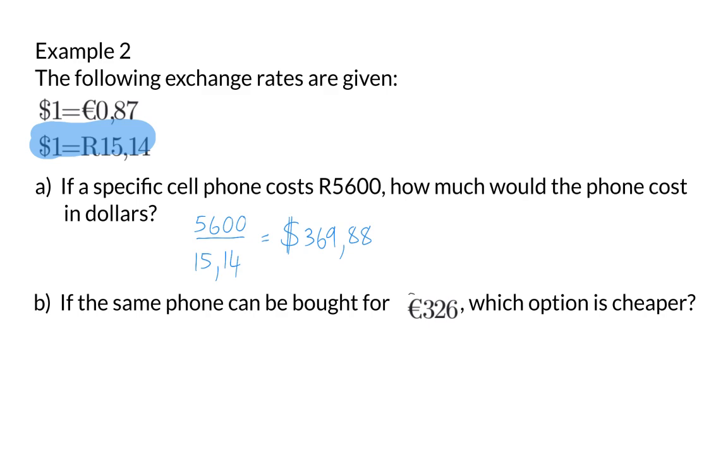Example B: If the same phone can be bought for 326 euro, which option is cheaper? To answer this question, we need both our options in the same currency.